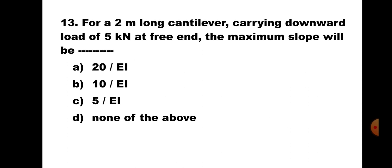For a 2m long cantilever carrying a downward load of 5kN at the free end, the maximum slope will be: A. 20/EI, B. 10/EI, C. 5/EI, D. None of the above. This is standard case number 1 of the cantilever and maximum slope will be WL²/2EI. Putting the values, you will get the answer as 10/EI. Hence, the correct answer is B. 10/EI.